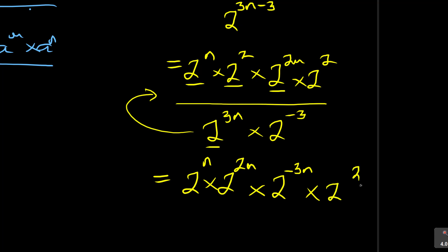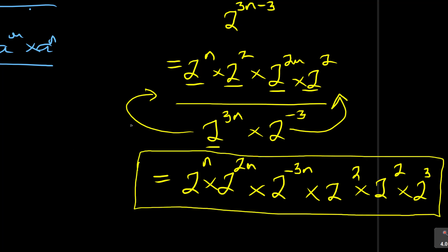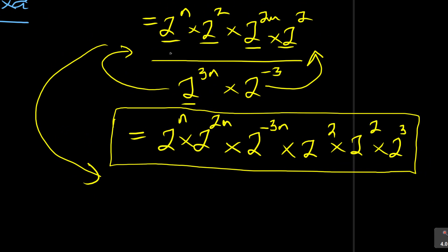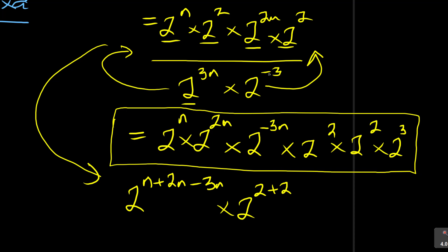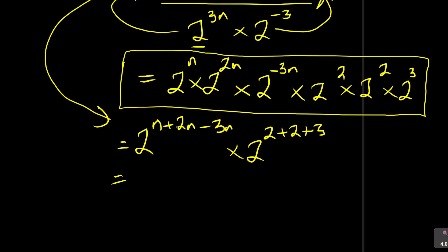When that term goes to the top it becomes 2 to the power of negative 3n. Then applying the law — adding exponents — you get 2 to the power of n plus 2n minus 3n, and for the constants 2 plus 2 plus 3 is 7. So you have 2 to the power of 0 times 2 to the power of 7. Since 2 to the power of 0 equals 1, the answer is 1 times 2 to the power of 7, which equals 128. You can leave your answer as 2 to the power of 7 since they said no calculator.